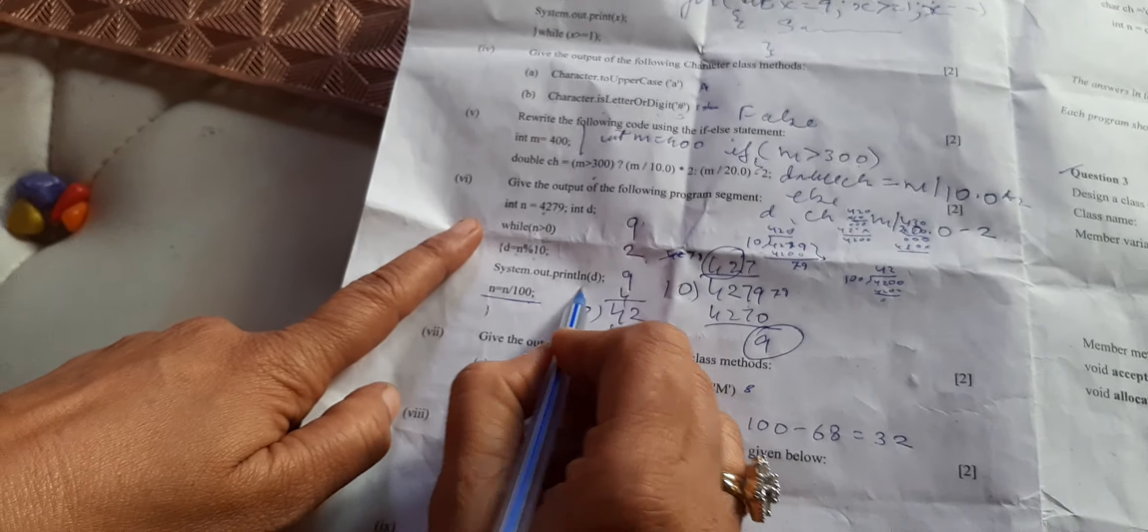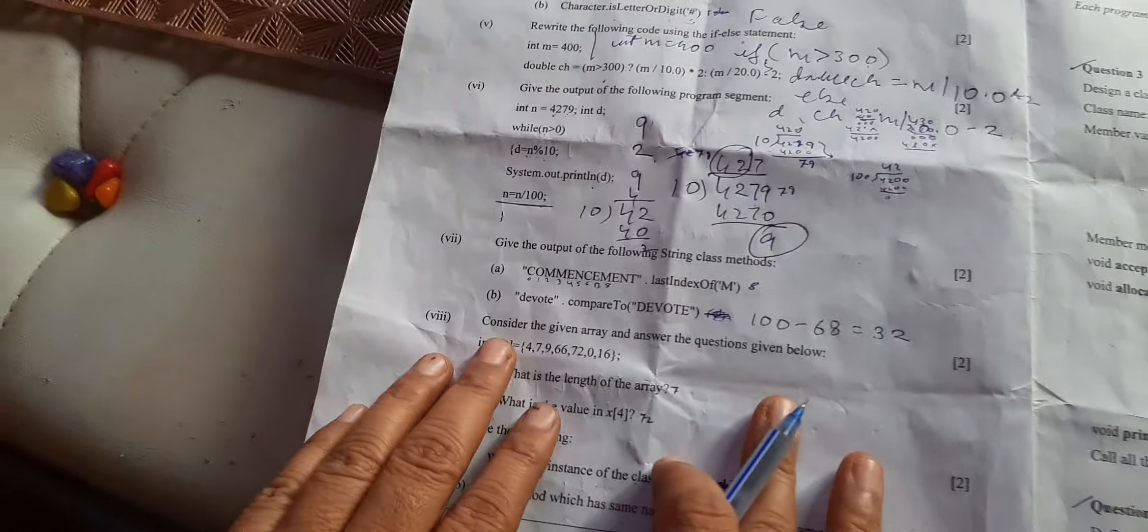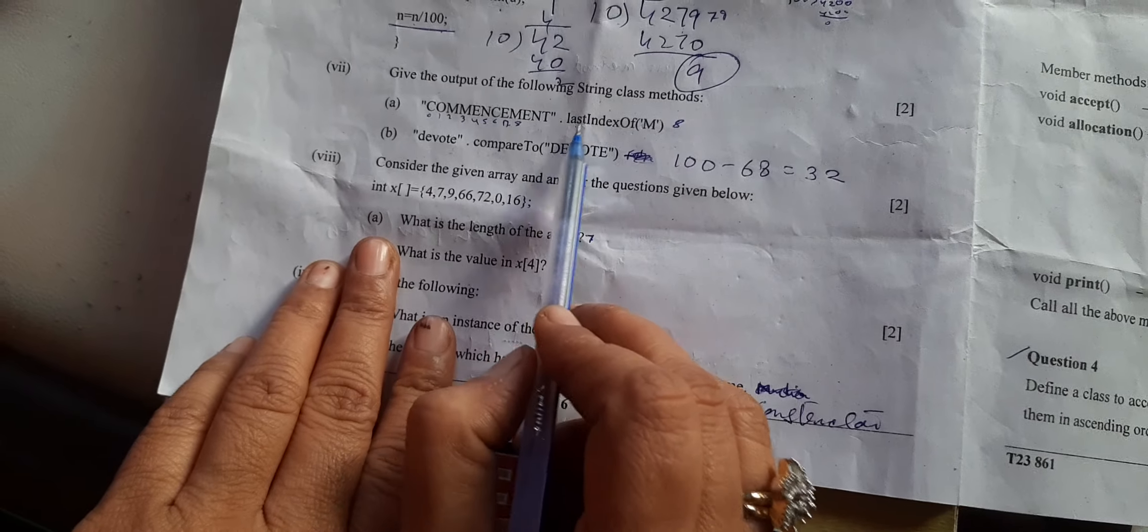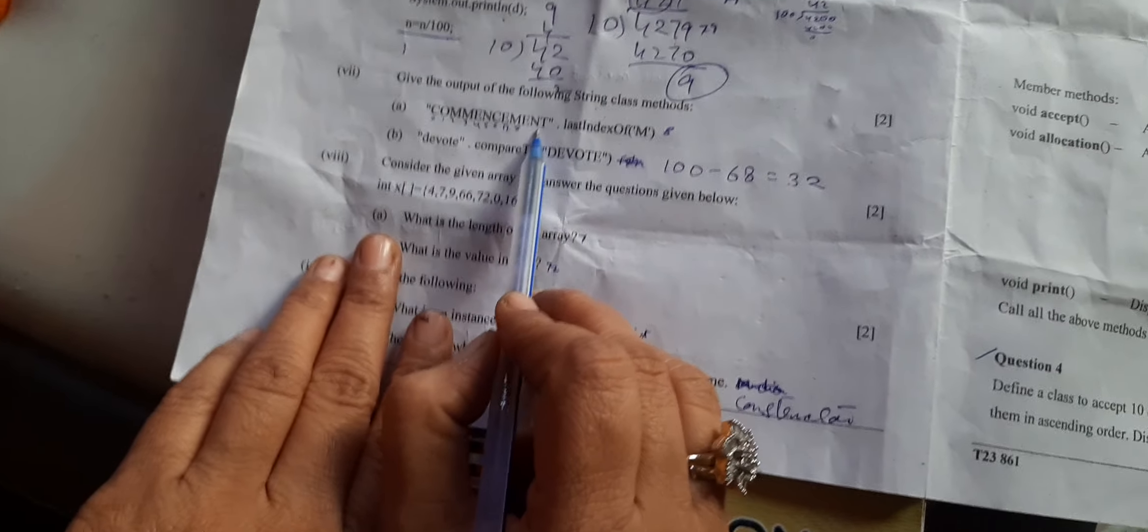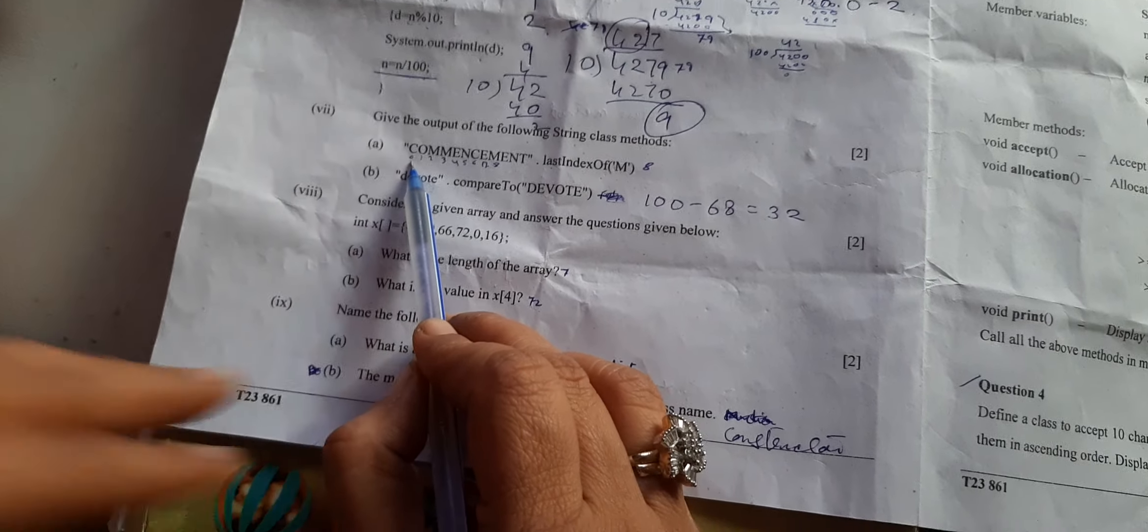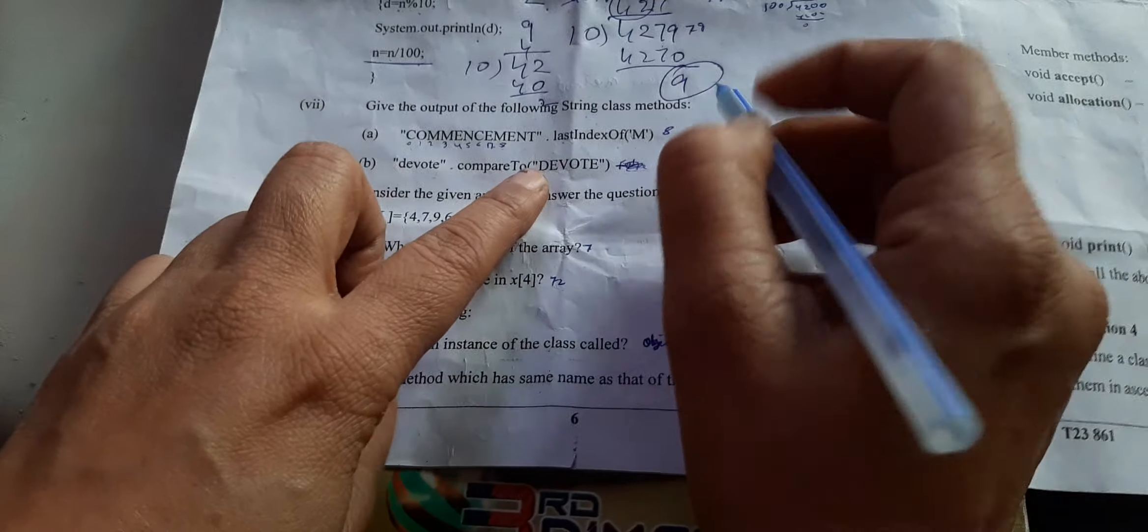Give the output of the following. They are using lastIndexOf. lastIndexOf means we'll take from back of the sentence. m index we have to tell. Here we'll do starting index of string from 0 like in arrays, so here the answer will be 8.